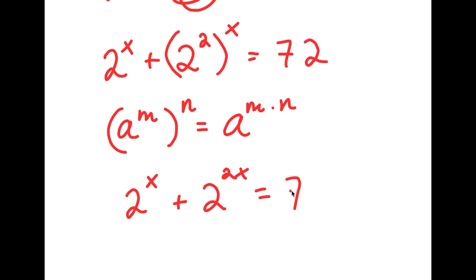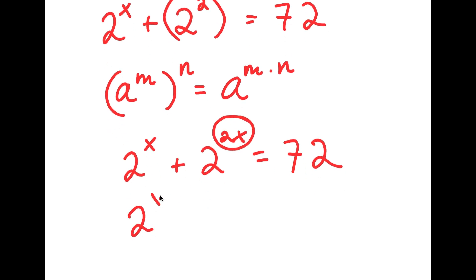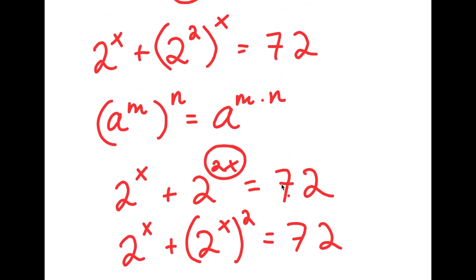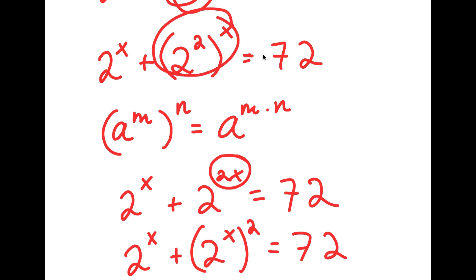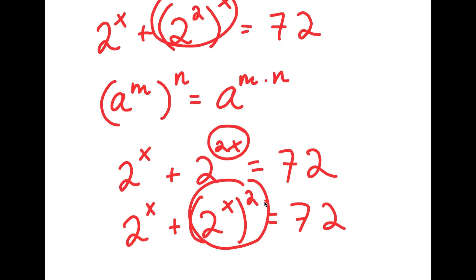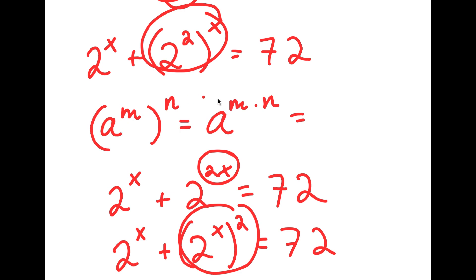This is equal to 72. Now we're going to reverse this property — since a to the power of m to the power of n equals a to the power of m times n, I can also rewrite 2 to the power of 2x as 2 to the power of x to the power of 2. So a to the power of m to the power of n equals a to the power of n to the power of m.